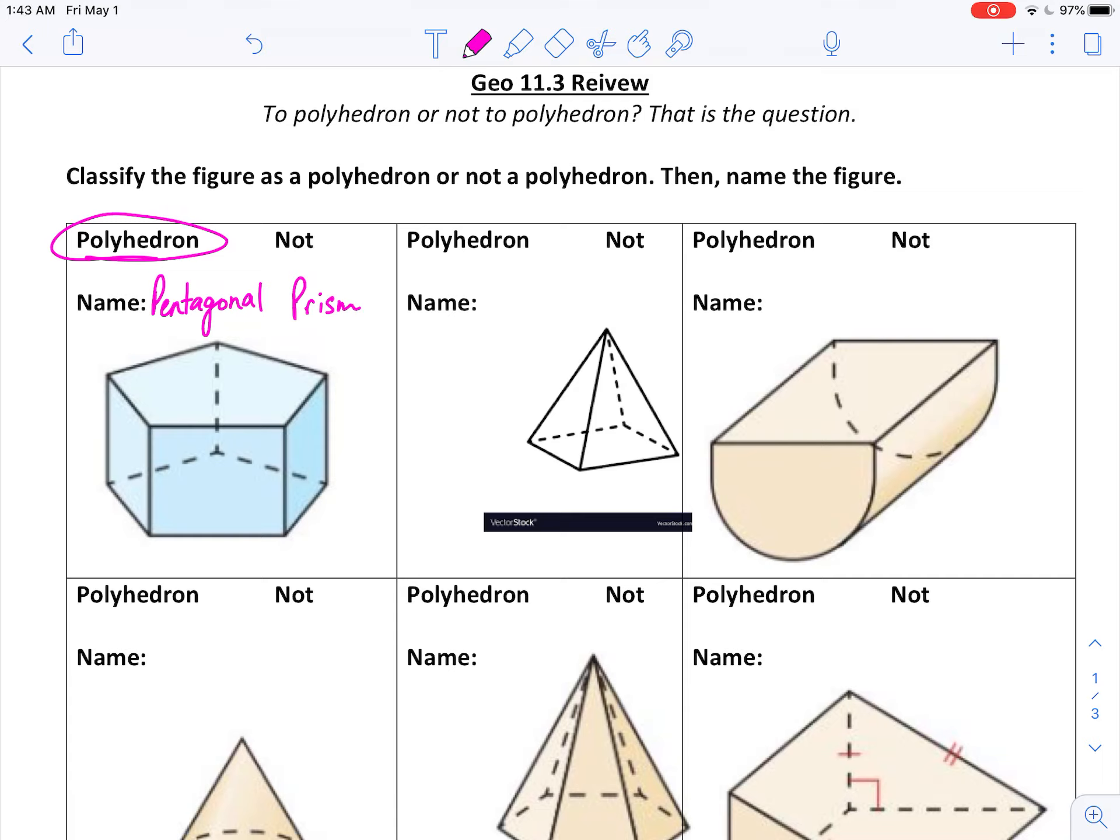If it had triangle sides, if these sides were triangles, then of course it would be a pyramid.